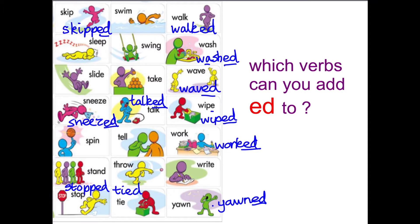I was swimming in the pool - that would be I swam in the pool. I was sleeping in bed - I slept in my bed. I was swinging on a swing - this is a hard one - I swung. Sometimes you hear 'swang' for that one, so it might be either swung or swang - have to look that one up. I was sliding down the slide - I slid. You can get rid of the E; it actually becomes easier to spell. It's just slid.